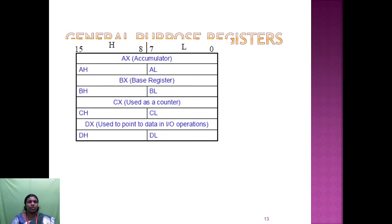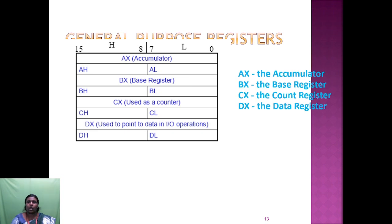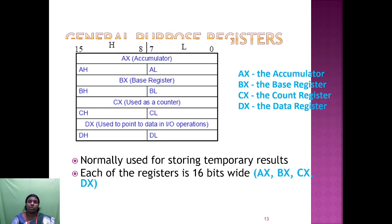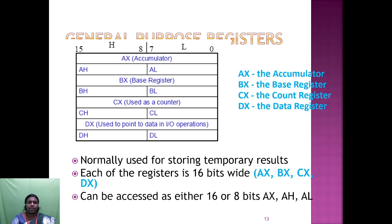The general purpose registers are: AX (accumulator), BX (base register), CX (counter), and DX (used to point to data in IO operations). Each register is 16-bit wide and can be accessed either as a full 16-bit register (e.g., AX), as the high byte (AH, bits 8 to 15), or as the low byte (AL, bits 0 to 7).